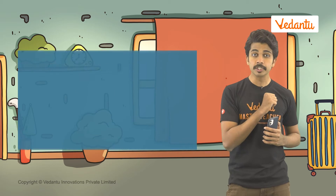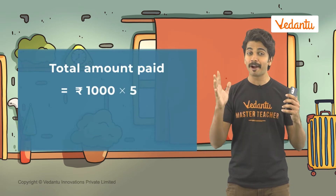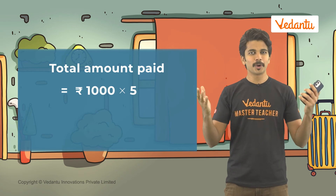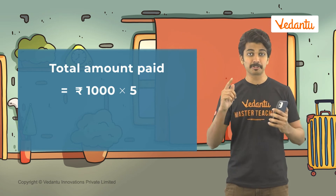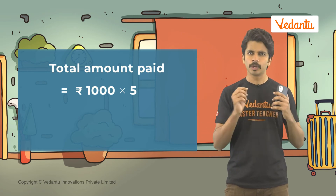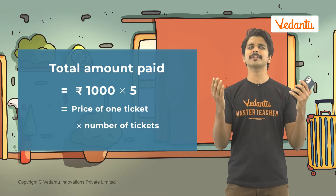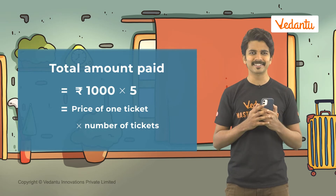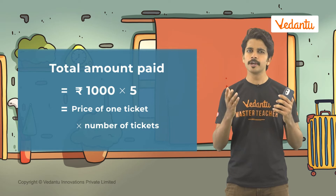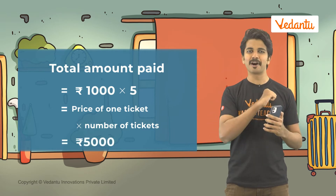1000 here is the price of one ticket while 5 is the number of tickets. So we can say that the total amount paid will be the price of one ticket multiplied by the total number of tickets. So multiplying 1000 by 5, we get 5000 rupees.